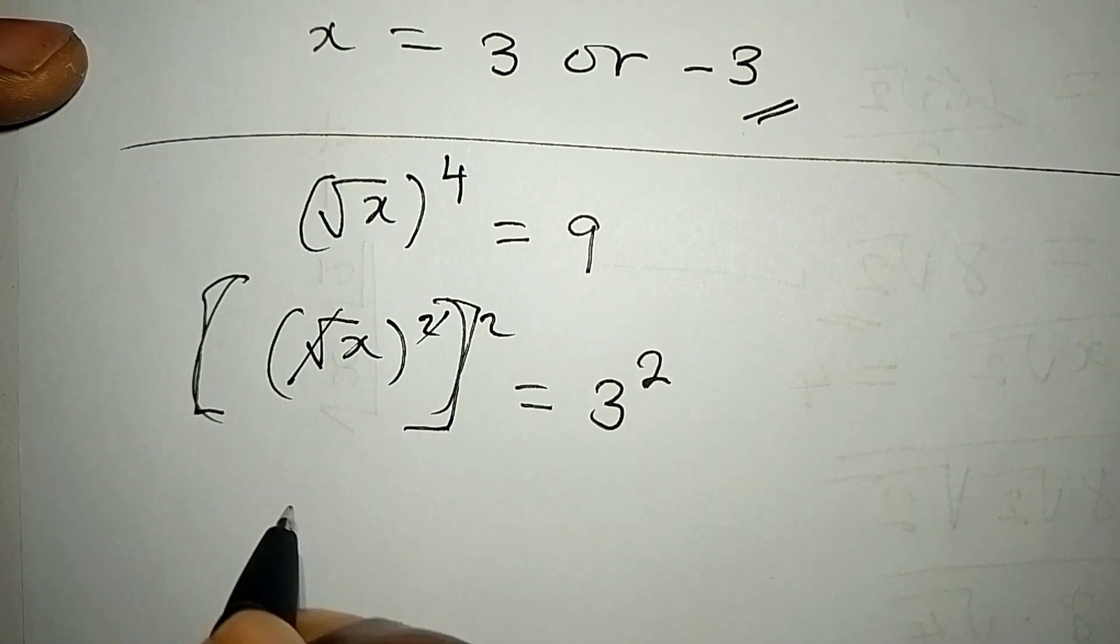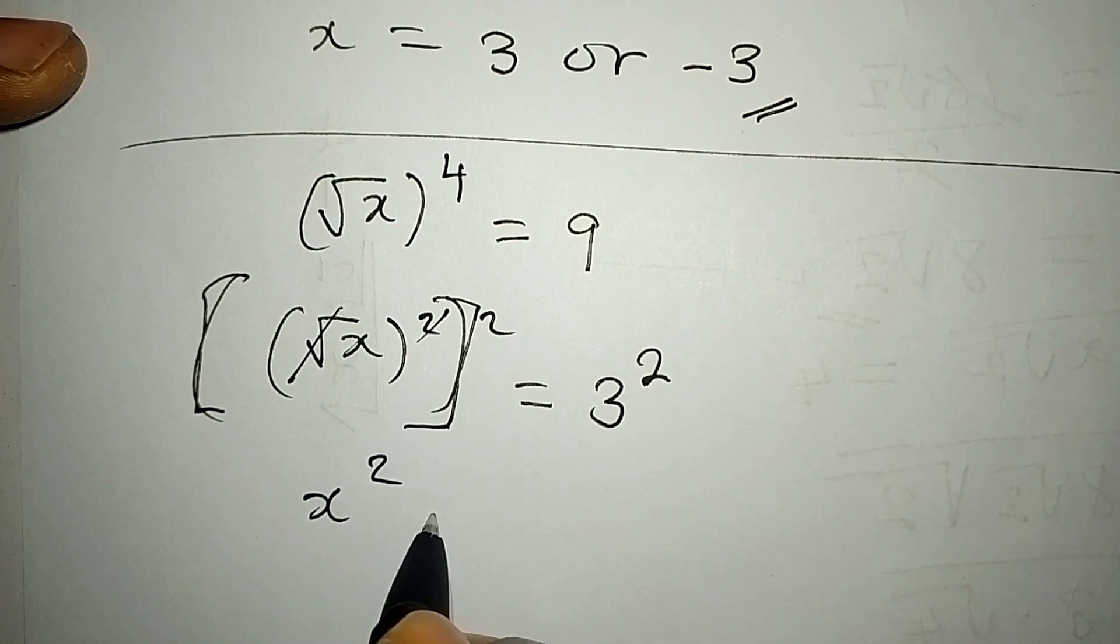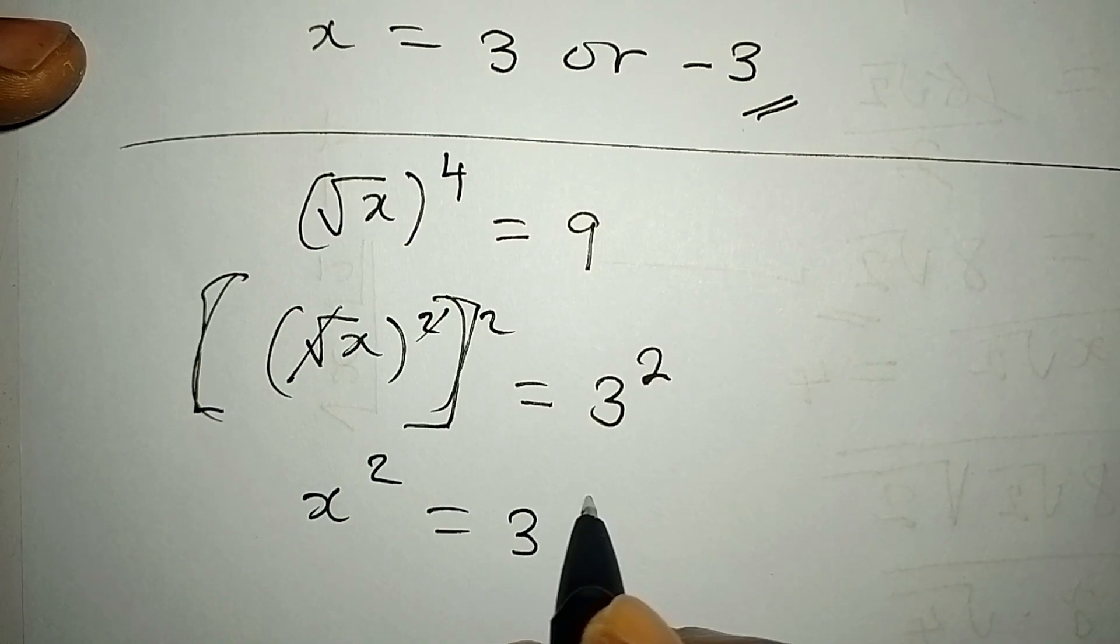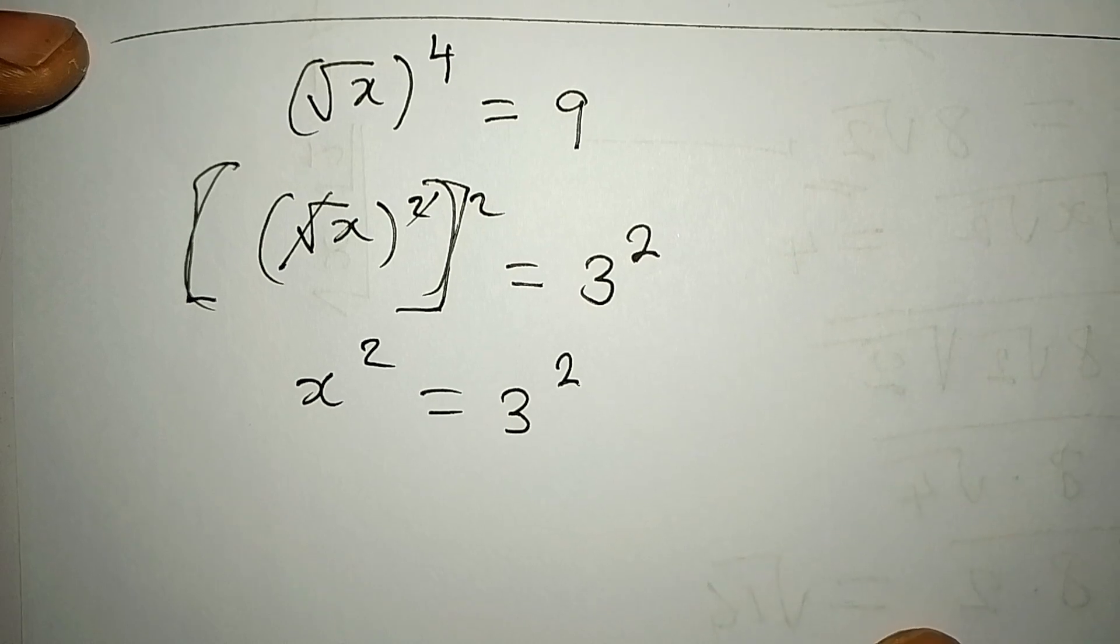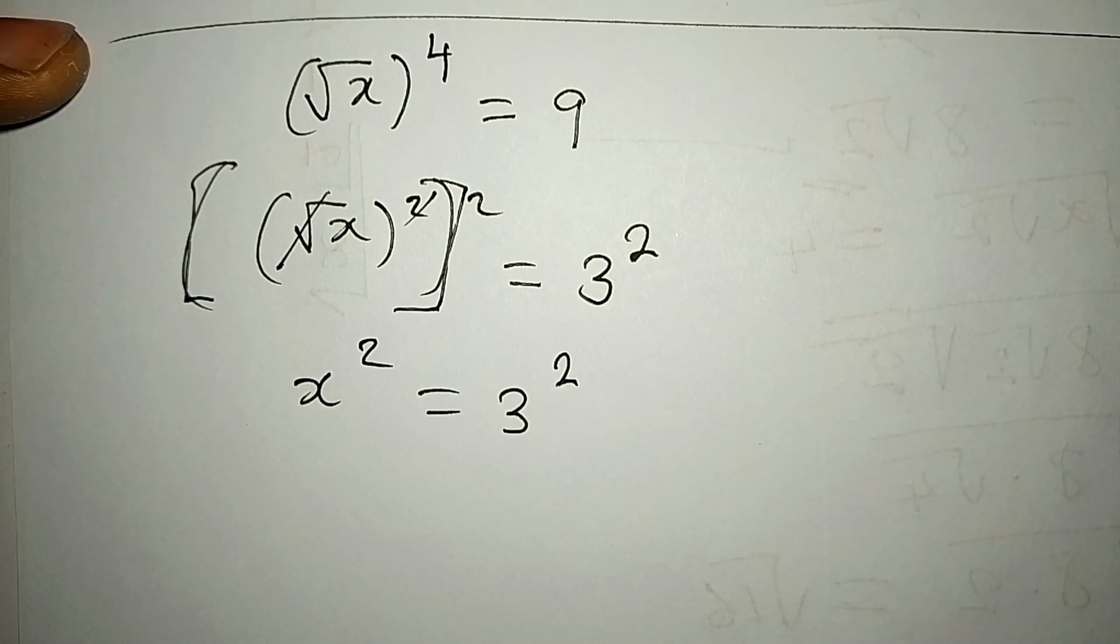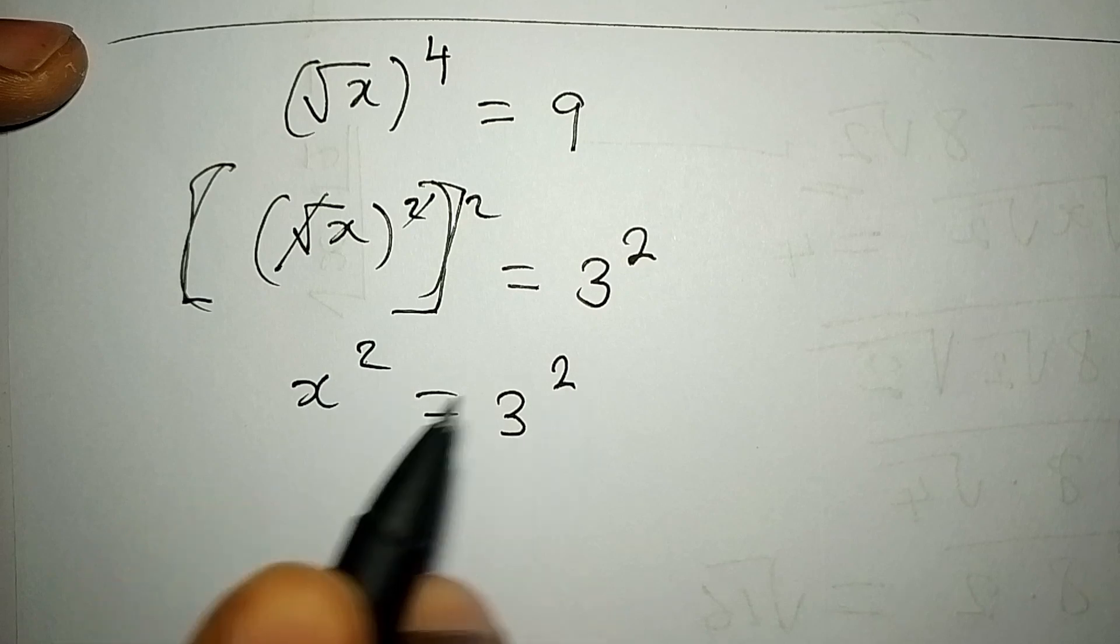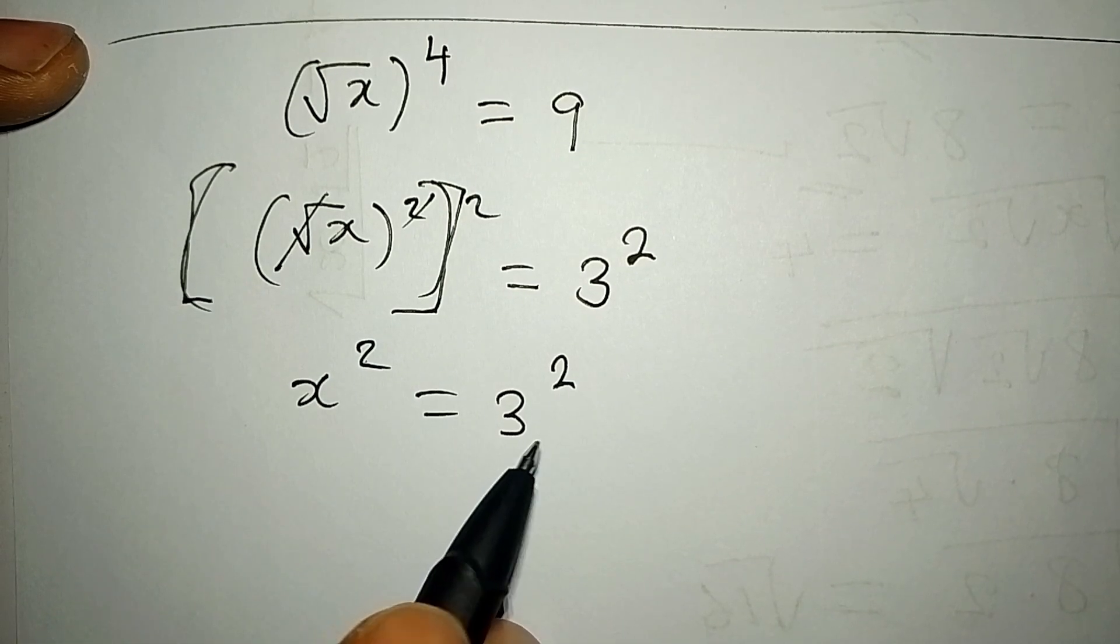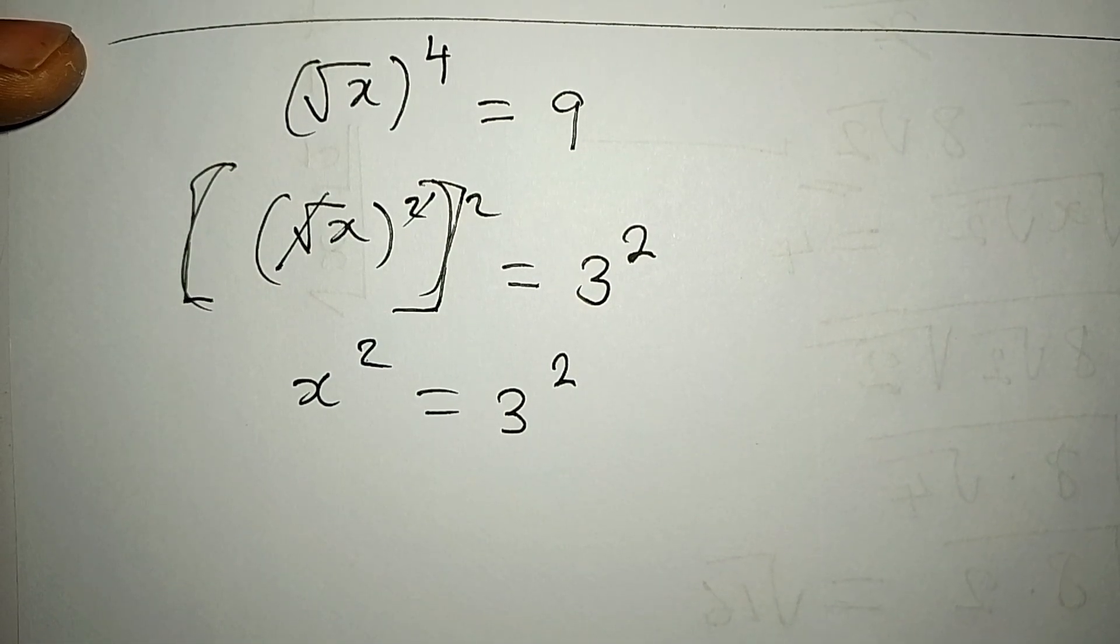This can just go with this and we are having x to the power of two equal to three to the power of two. Now look at what we can do, or look at what a couple of persons will do. Because we have the same powers, we will say let x be equal to three. That is correct, but it is not completely correct.